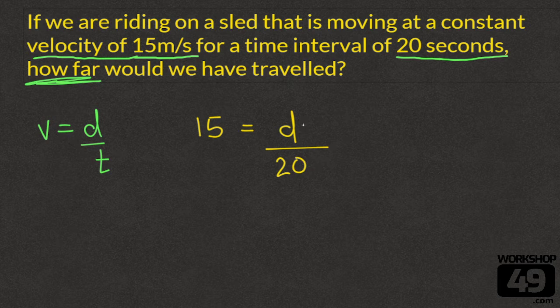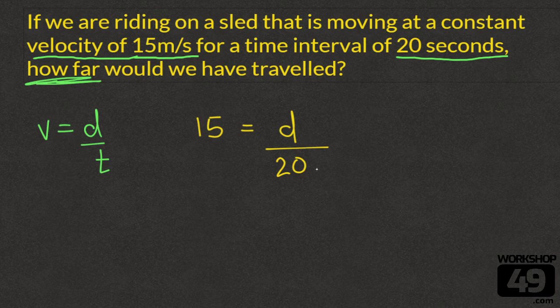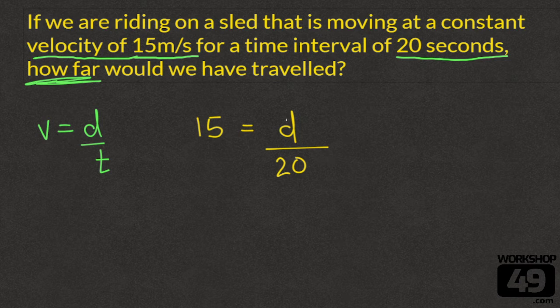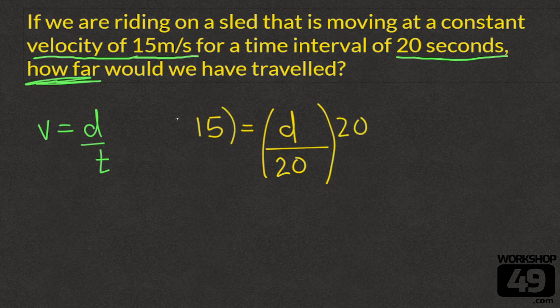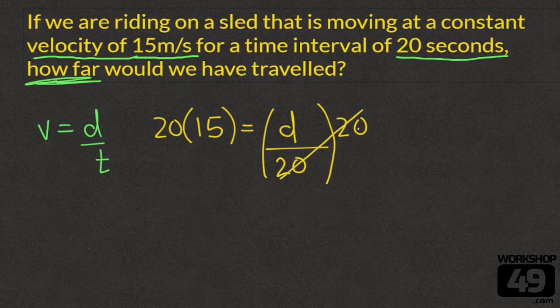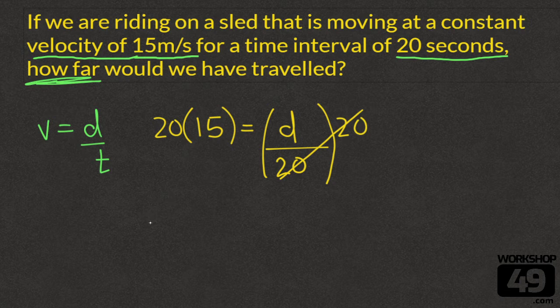In order to solve the distance we need to get rid of this 20 on the bottom. If you've made it this far, science complete, it's time for math. To get rid of a number in the denominator we're going to need to multiply both sides by this 20. On the right hand side the 20s will cancel out becoming a 1. On the left hand side we multiply them together. 20 times 15 is going to equal 300, which will equal our distance.